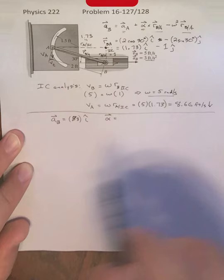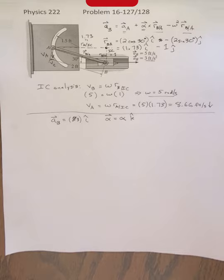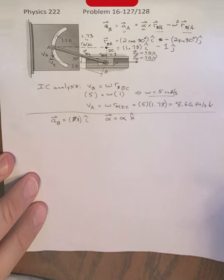Alpha, the angular acceleration, since everything here is rotating in a plane, is just going to be equal to alpha times k hat because that's pointing in the z direction. We'll have to keep that in mind when we take the cross product. And then we have omega, which is just 5.